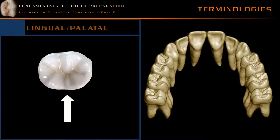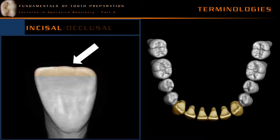So if the word lingual surface is used, that doesn't mean it refers to a mandibular tooth — it could be a maxillary tooth also. The term incisal aspect is used to represent the incisal edge of both maxillary and mandibular teeth. The word incisal is also used to represent any cavity preparation wall that faces towards the incisal edge.